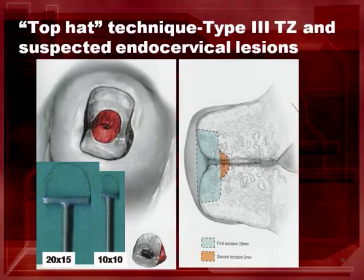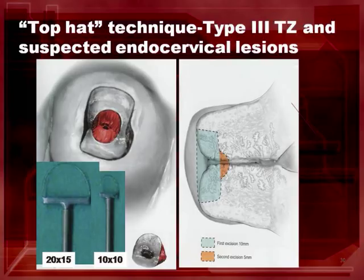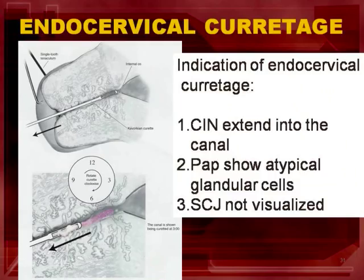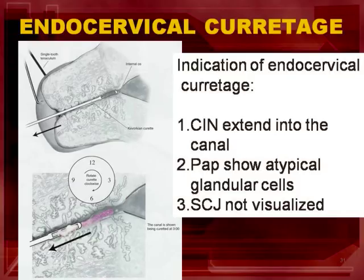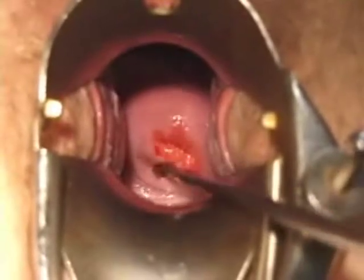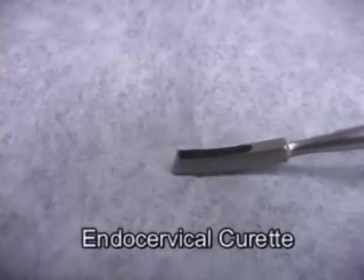The top hat technique is employed in patients with endocervical gland involvement or type 3 transformation zone with the lesion extending deep into the endocervical canal. Two sweeps are made: the first sweep uses a T-bar size 20 by 15 mm to obtain the first specimen of 10 mm depth with a 3 mm free margin; the second sweep uses a T-bar size 10 by 10 mm or a sling electrode to obtain the endocervical sample with 5 mm depth. Endocervical curettage may be indicated prior to LEEP if the patient has CIN extending into the canal, the Pap smear shows atypical glandular cells, or the squamocolumnar junction is not well visualized. If endometrial pathology is suspected, a pipelle endometrial sampling should also be done. The instrument used for endocervical curettage is a Kevorkian curette.